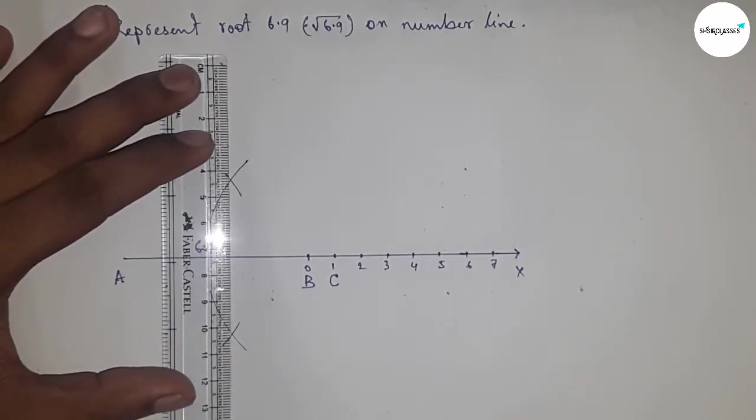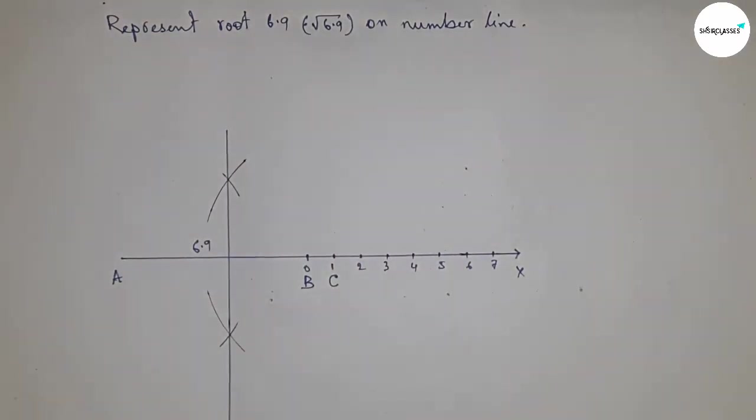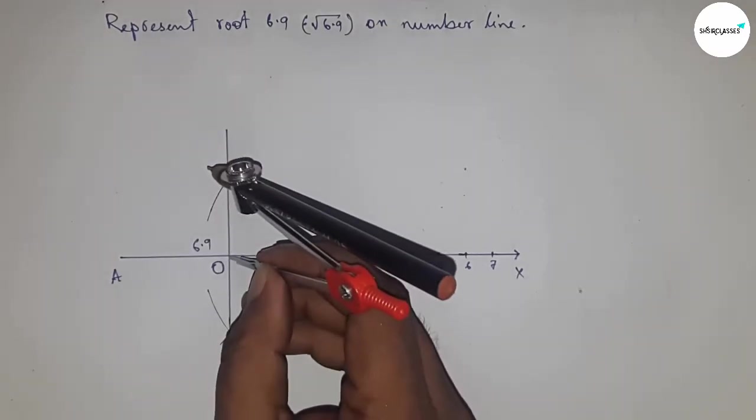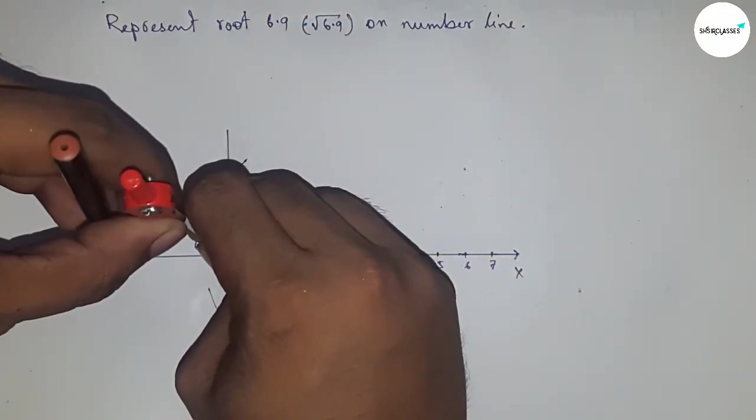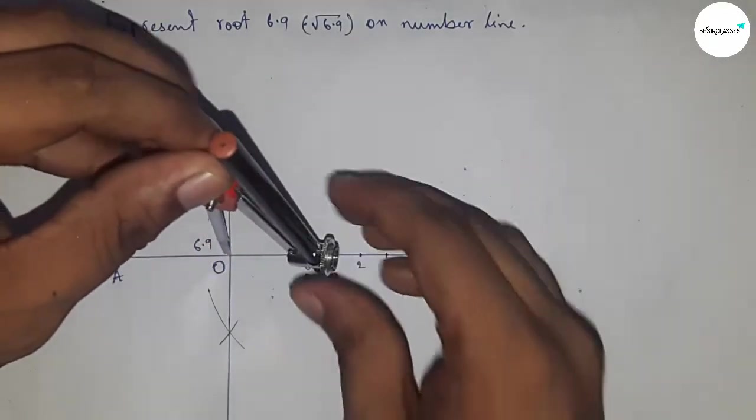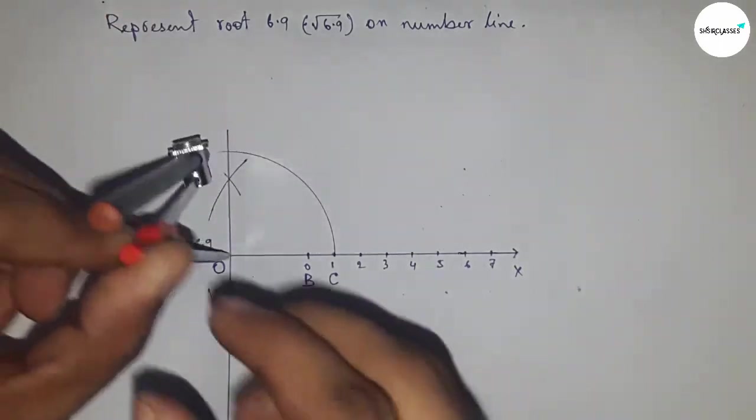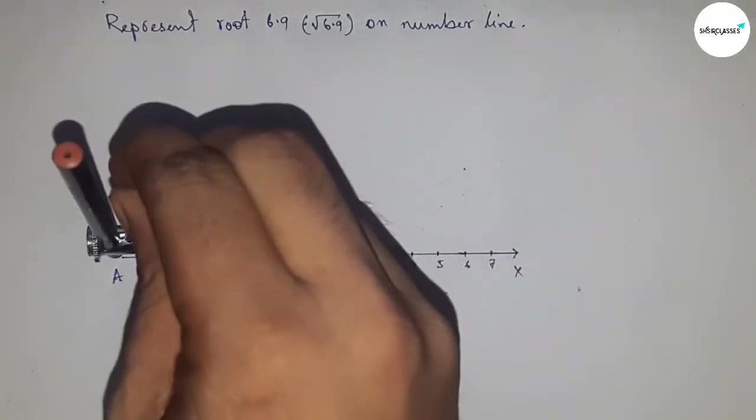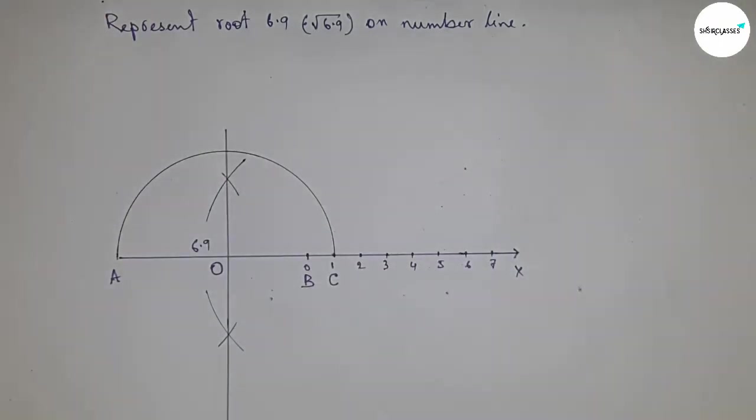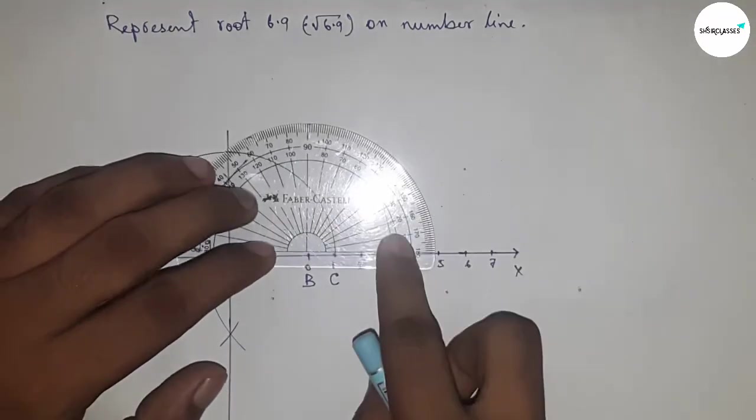Now take the distance OA and OC to draw a semicircle through points A and C. Now construct a 90-degree angle on point B by using a protractor.